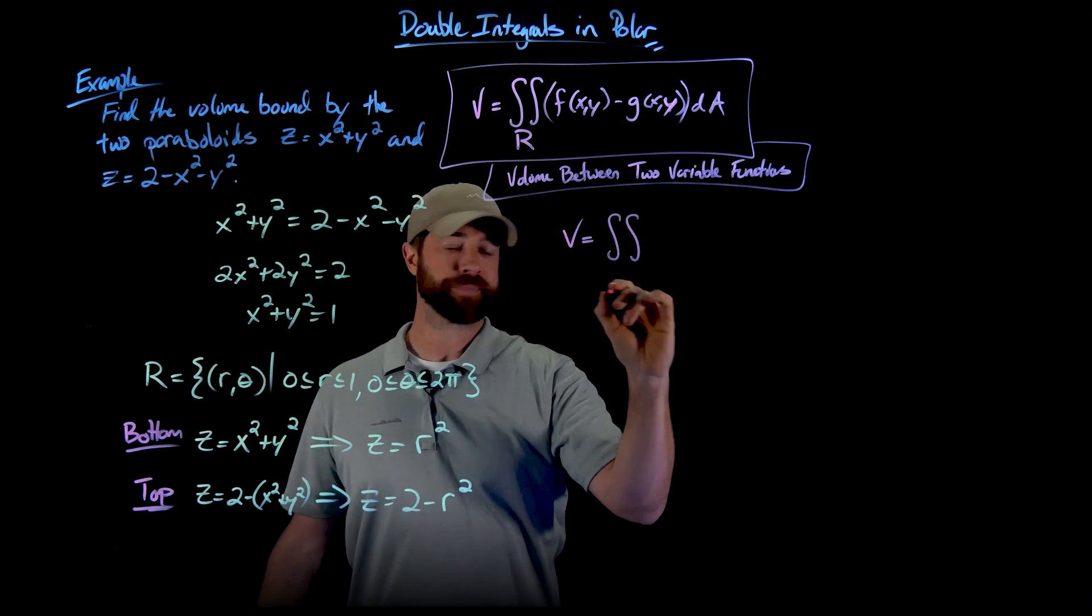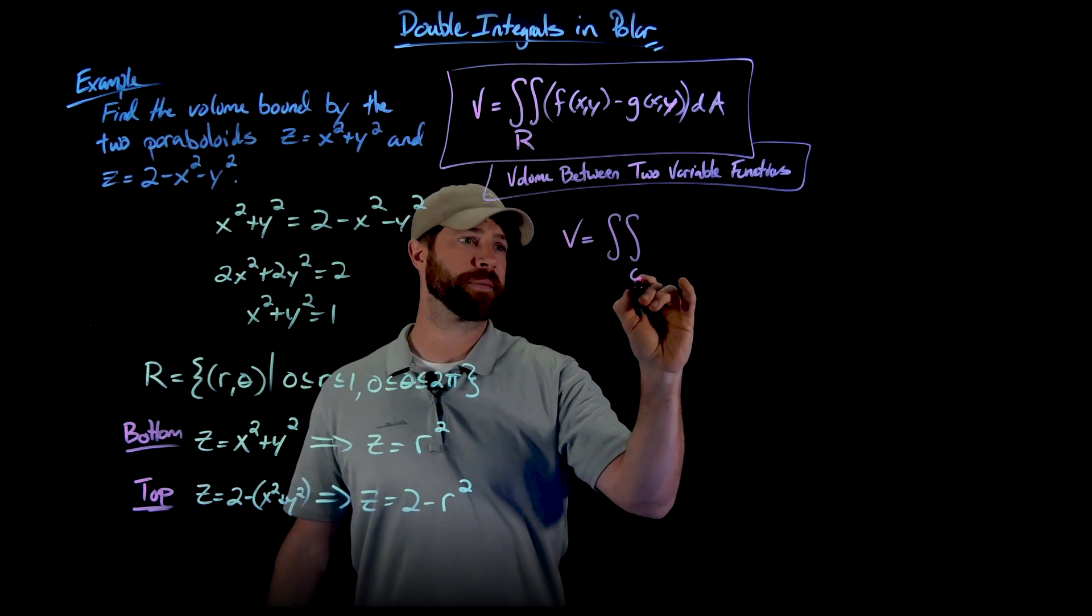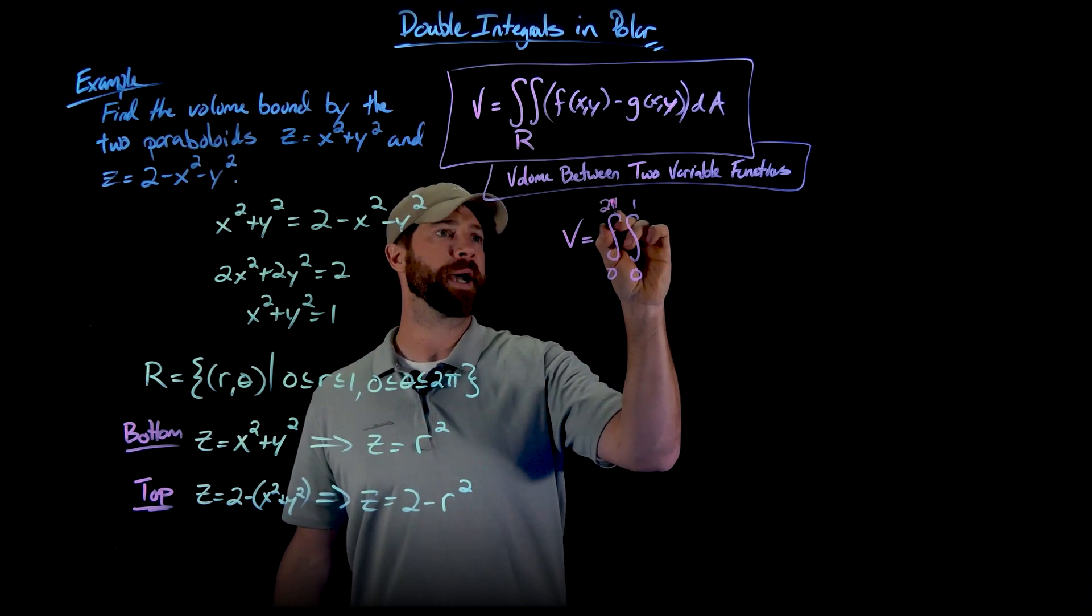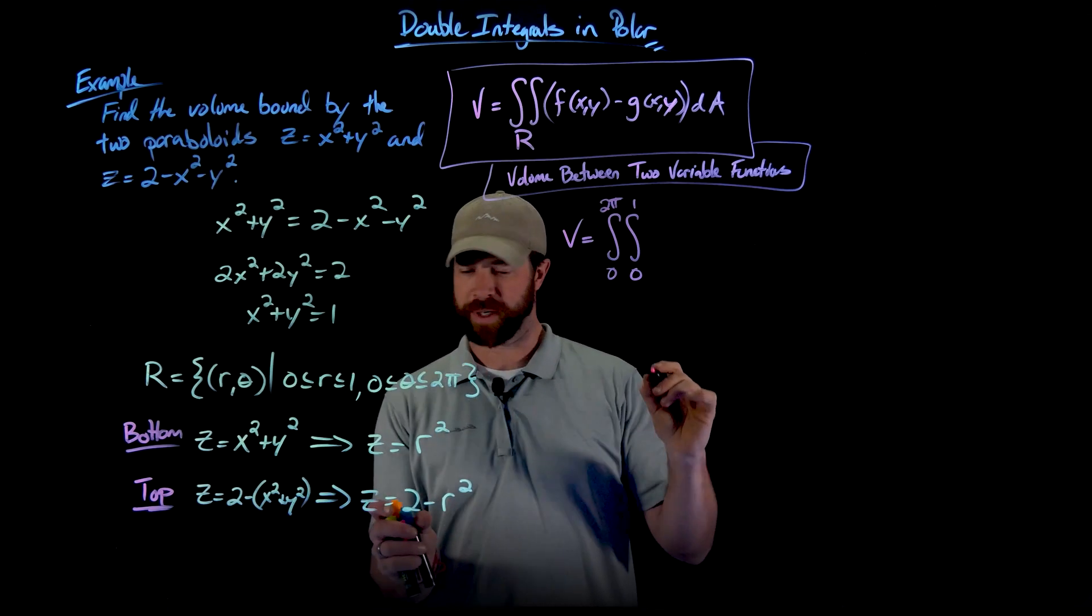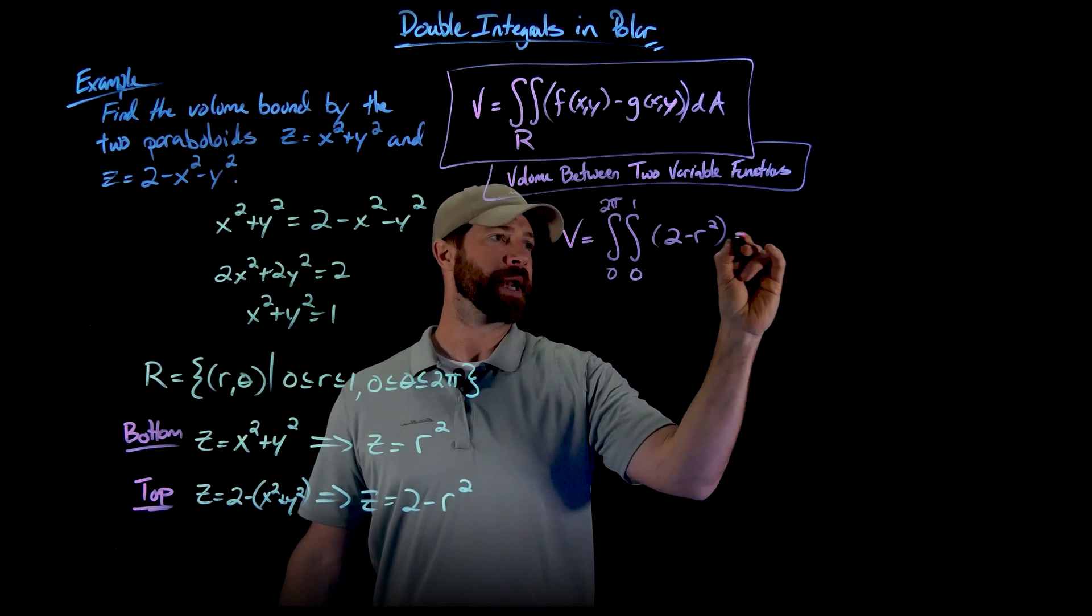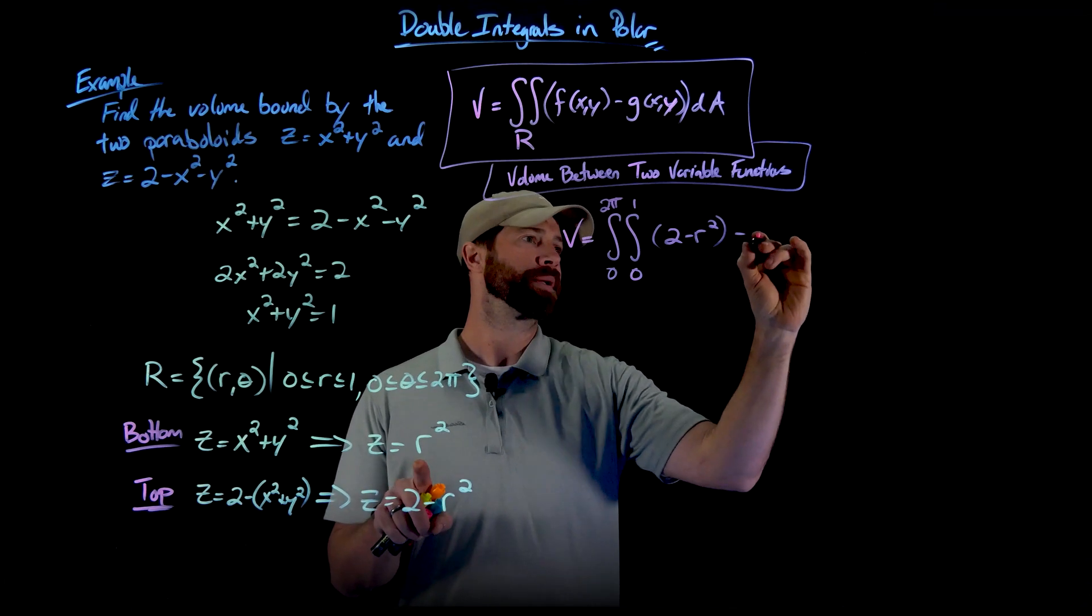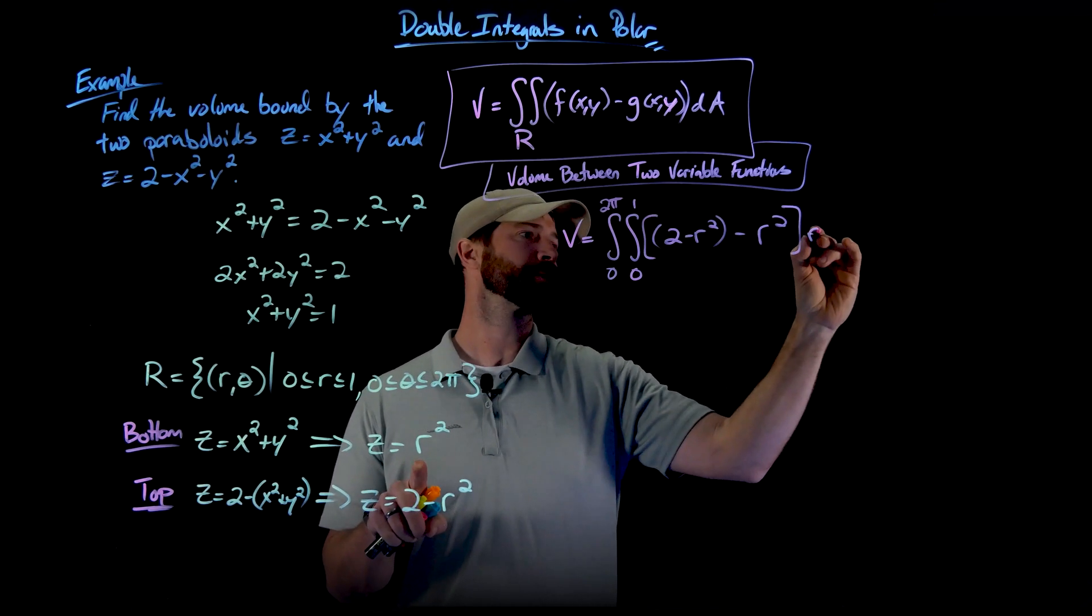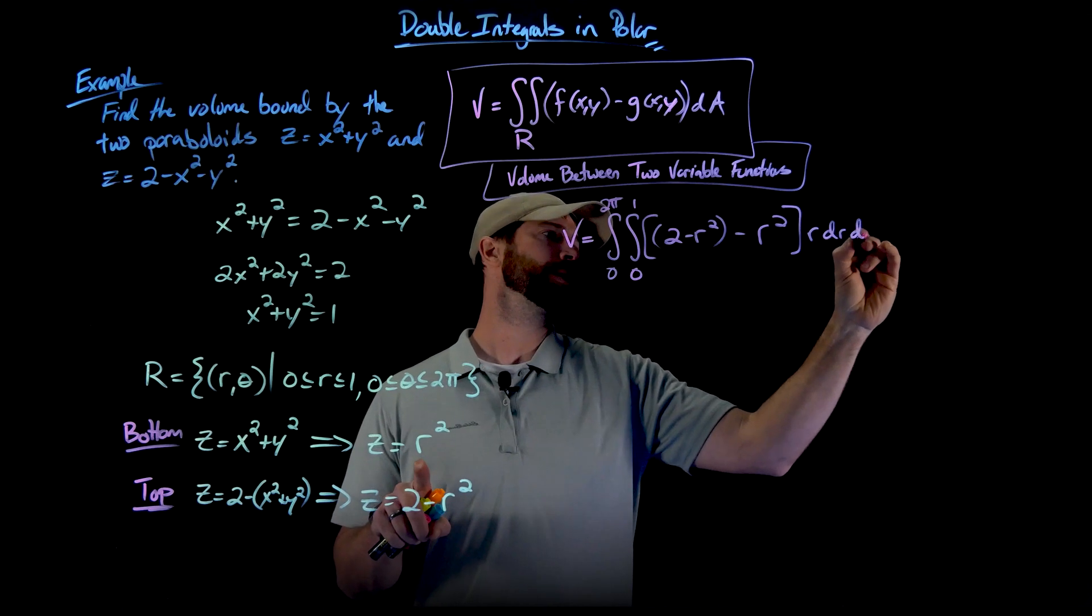And I have my upper function which is 2 minus r squared. And I'm going to subtract away this lower function of r squared. And that is times r dr d theta.